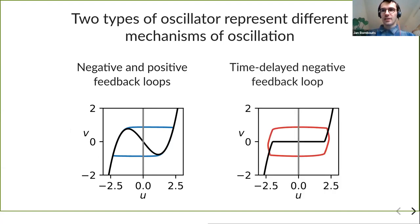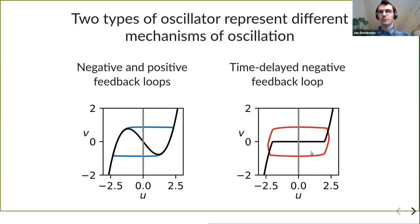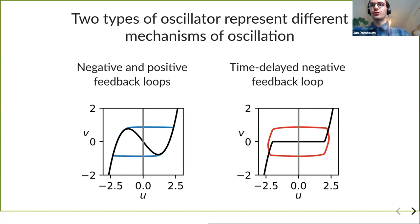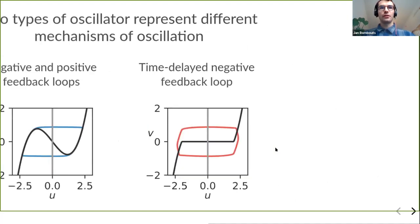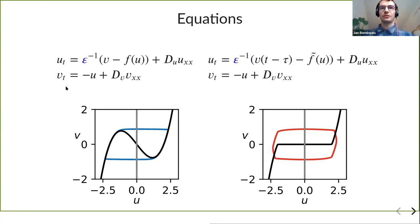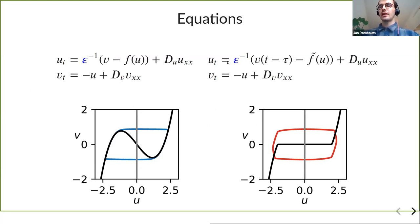The second oscillator is based on the time-delayed negative feedback loop. It has a similar structure with something analogous to the cubic nullcline, but the branches are cut off, so the system overshoots rather than following the branches. There is an important parameter epsilon that denotes the timescale separation between the two variables: u is the fast variable, and epsilon denotes how fast you jump between those branches. This parameter is also present in the delayed system.